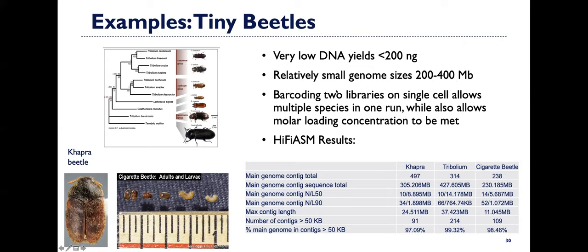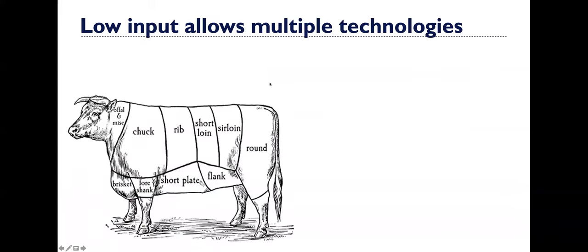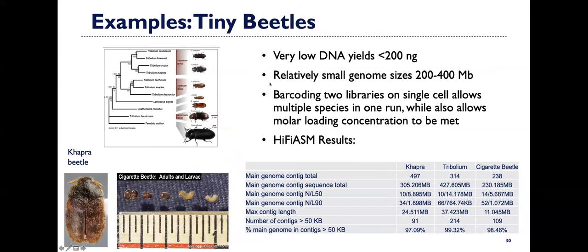If we generate, we can have no problem generating, shearing down, getting good fragment lengths, generating a hi-fi library. But we sometimes come to a point where we don't have the molar loading concentration needed to run an entire cell. So what we've done instead is barcoded multiple libraries onto a single cell. And this has allowed us to run not only multiple species in one run, which lowers cost, but also allow us to meet the molar loading concentrations needed for these extremely small insects.